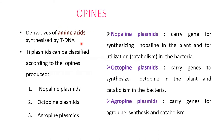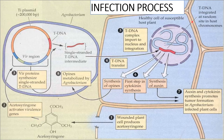Opines are derivatives of amino acids synthesized by T-DNA. Ti plasmids can be classified according to the opine they produce: nopaline plasmid, octopine plasmid, or agropine plasmid. The nopaline plasmid carries a gene for synthesizing nopaline in the plant and for catabolism in the bacterium. The octopine plasmid carries a gene for synthesis and catabolism of octopine. The agropine plasmid carries a gene for agropine synthesis and catabolism in the bacterium.